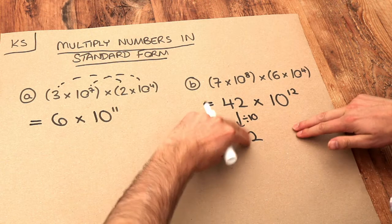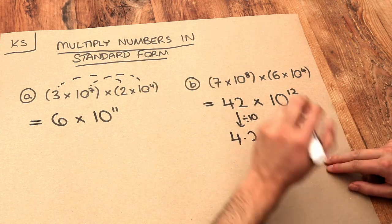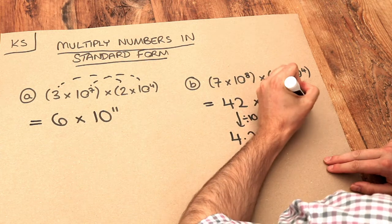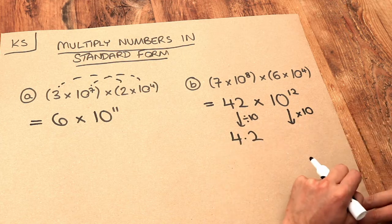But I want this number here to be the same as that. So if I've divided the first number by 10, then to compensate I have to make this 10 times bigger so that overall you end up with a number of the same value.